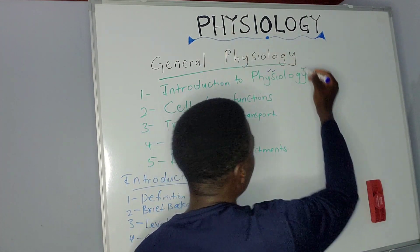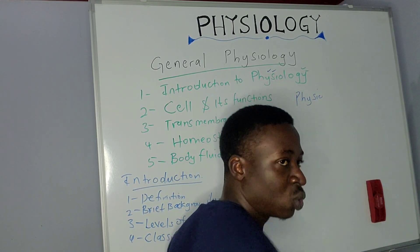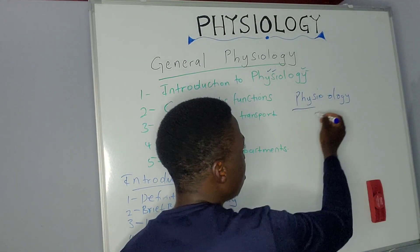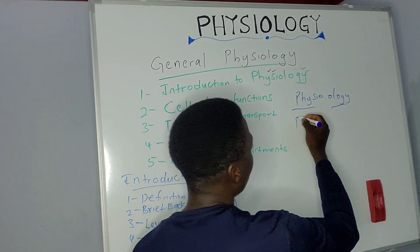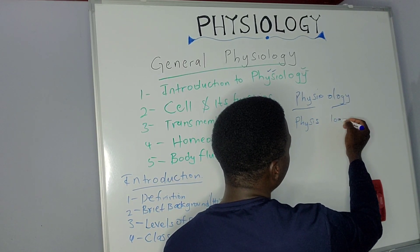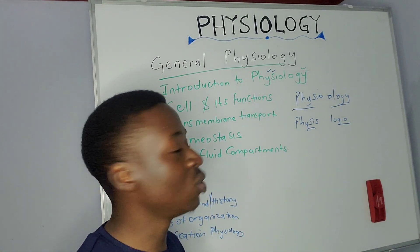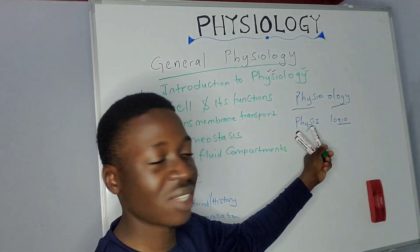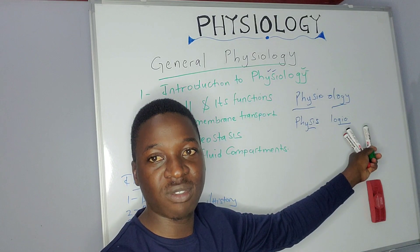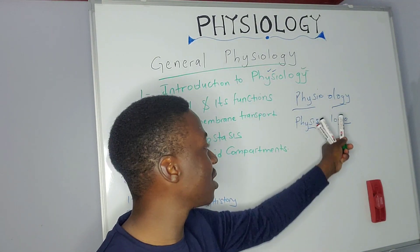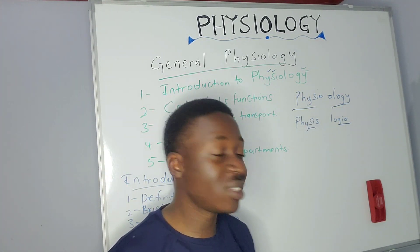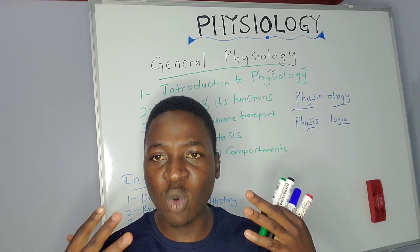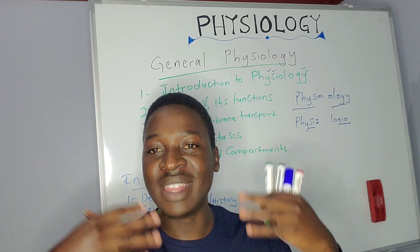The word physiology can be broken down into two parts: 'physio' and '-ology,' or in Greek, 'physio' and 'logia' — both mean the same thing. 'Physio' means nature or origin, and '-logia' means study of. So physiology was previously used by the ancient Greeks to refer to the physiological inquiry into the nature or workings of things.